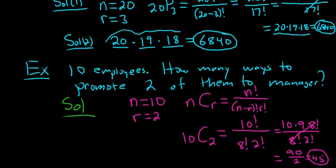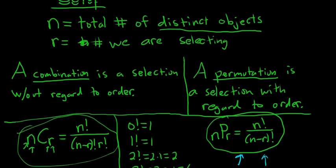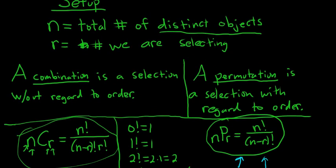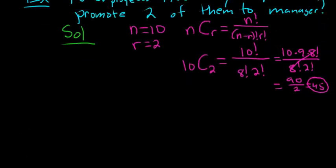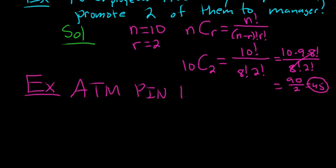Now one more, one more subtle remark. Up here, it did say distinct objects. So sometimes you have situations. I know I said that was the last example, but just one more. Sometimes you have situations where you can't use either. Here's an example. ATM pin numbers. So personal identification numbers. It's kind of redundant. These are four digits. Zero through nine.